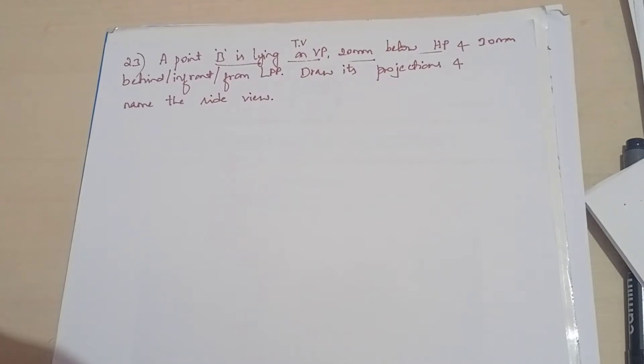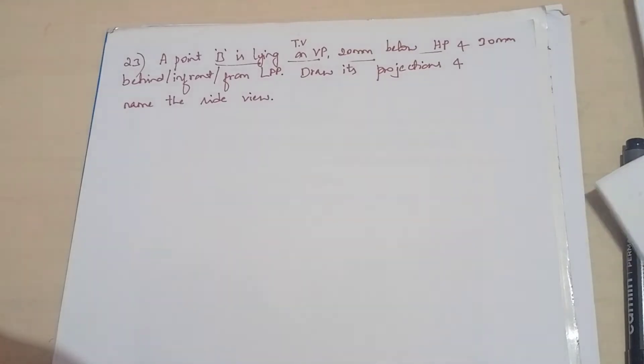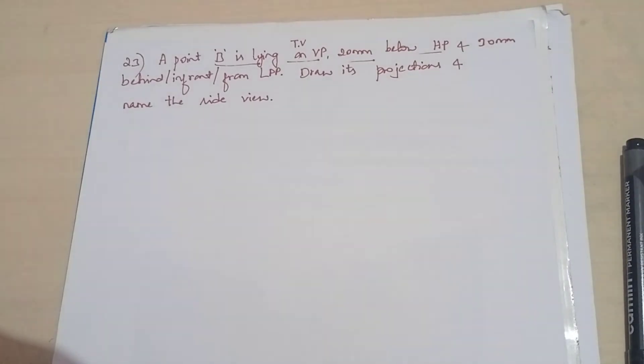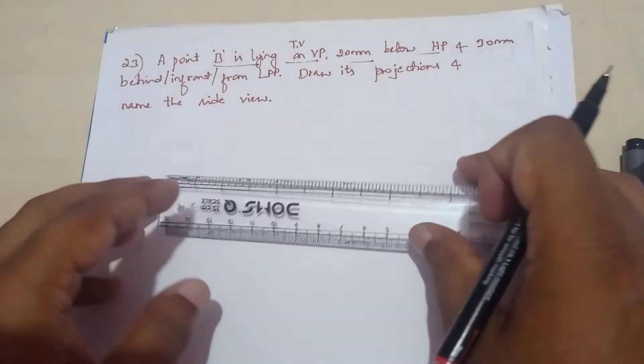So the front view lies here in the third and fourth quadrant. In both these cases, it is lying below the XY line. So that means here the front view we get it below the XY line.